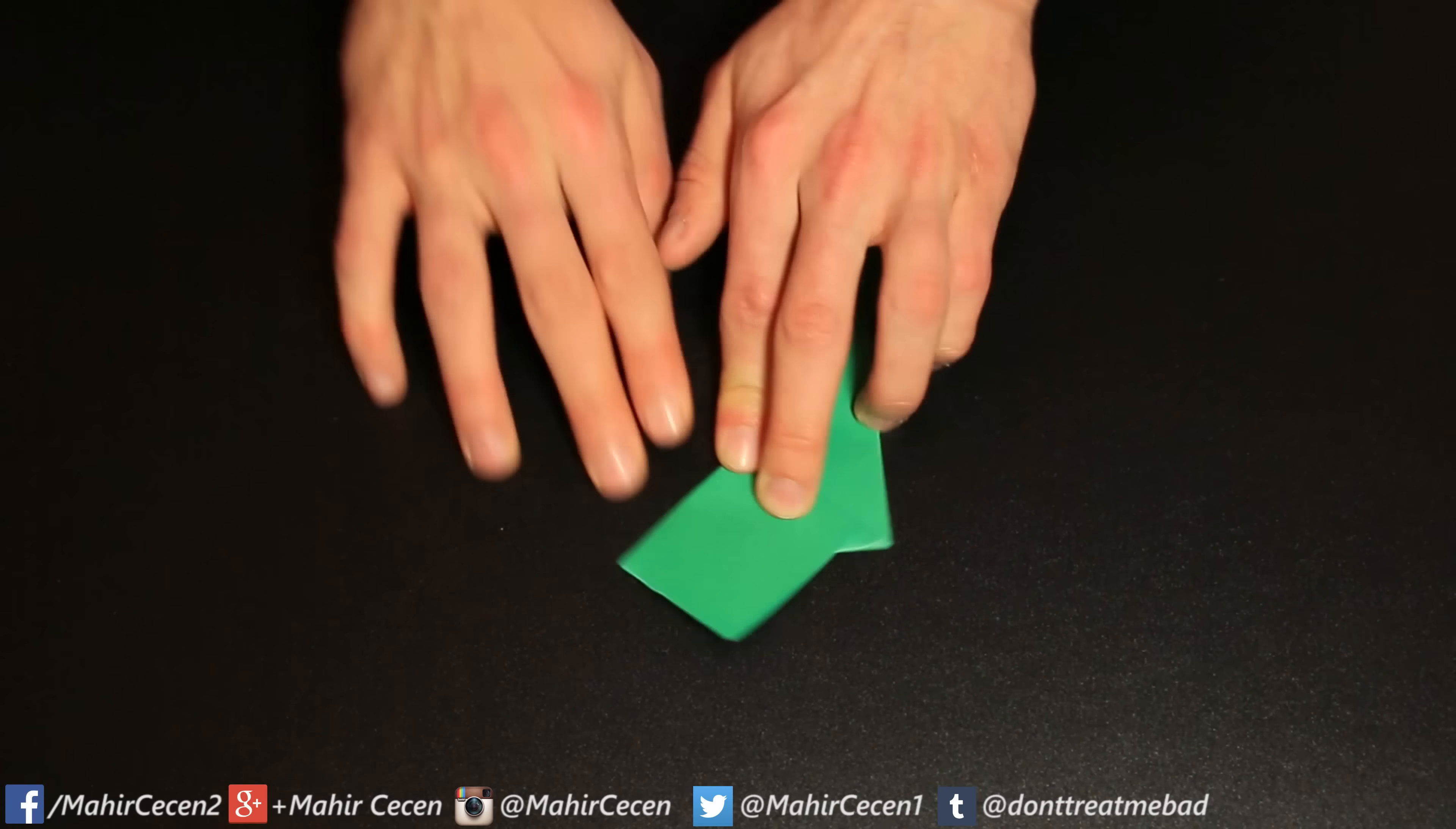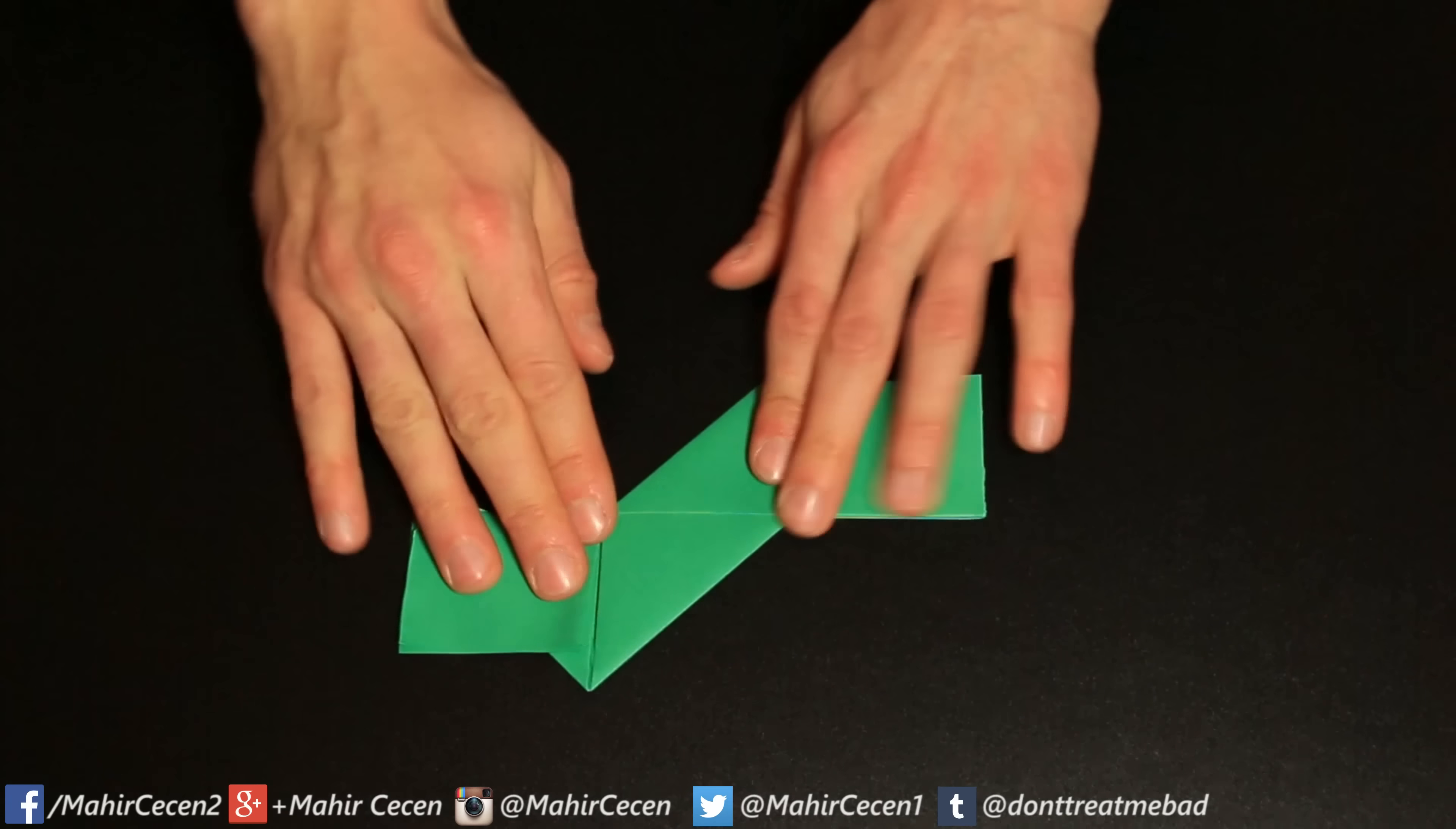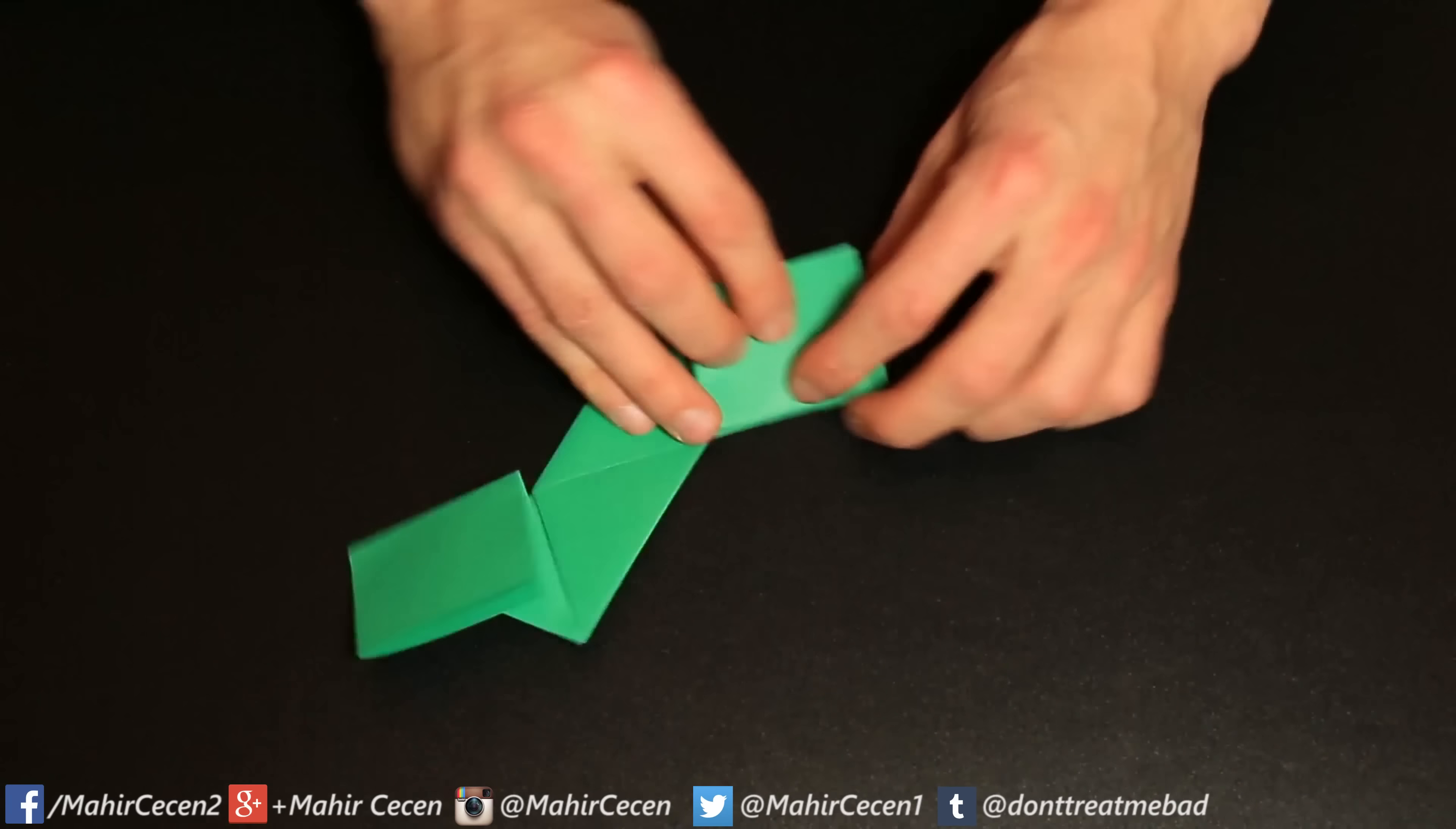And make sure you fold this part as much as possible to the top as you can see here. And fold it right back again so it's going to be a triangle.